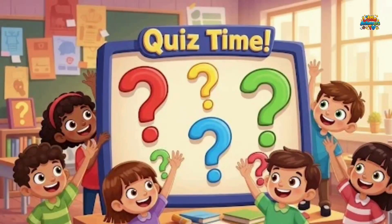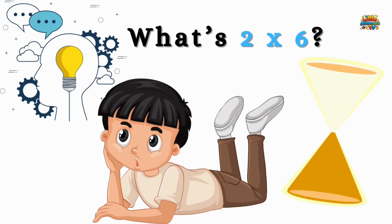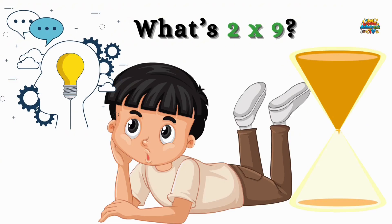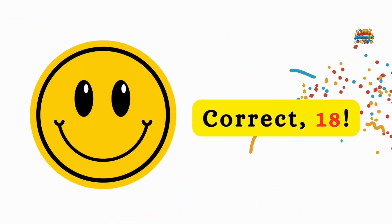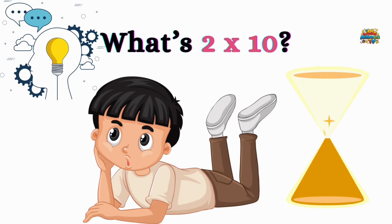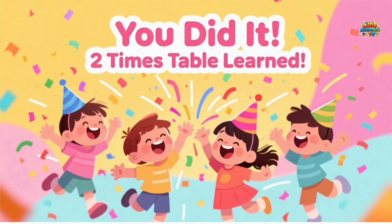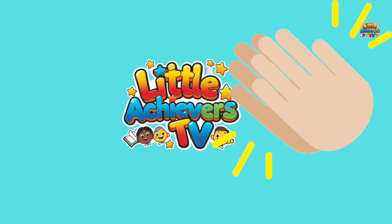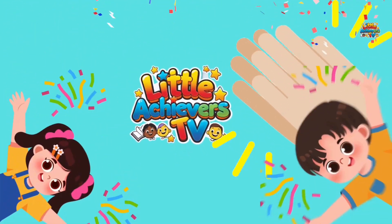Now it's quiz time. I'll ask and you shout the answer. What's two times six? Yes, it's twelve. What's two times nine? Correct, eighteen. What's two times ten? You got it, twenty. Wow, you did it! You learned the two times table. Give yourself a big clap and say: I'm a little achiever.